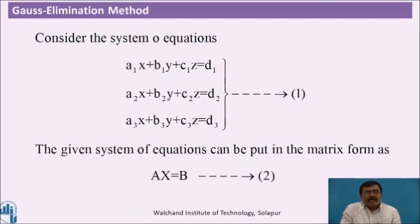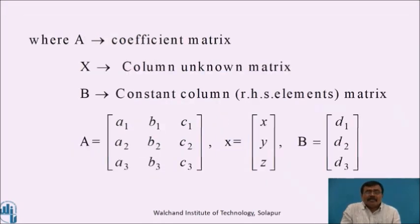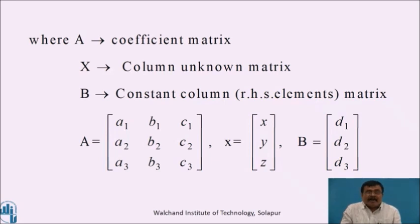I explain this method by considering three equations in three unknowns. Consider the system of equations: a1x plus b1y plus c1z equals d1, a2x plus b2y plus c2z equals d2, a3x plus b3y plus c3z equals d3. The given system of equations can be put in the matrix form as Ax equals b (equation 2), where A is the coefficient matrix with elements a1, b1, c1; a2, b2, c2; a3, b3, c3; x is the unknown column matrix x, y, z; and b is the constant matrix d1, d2, d3.